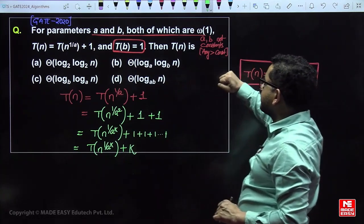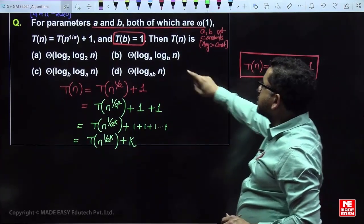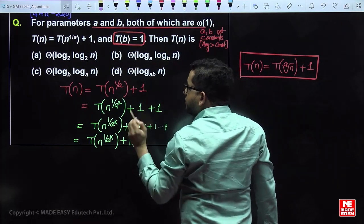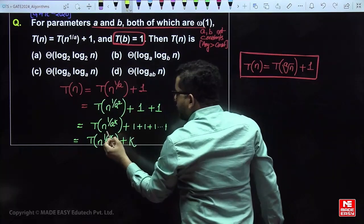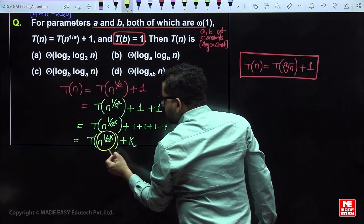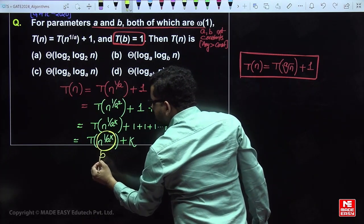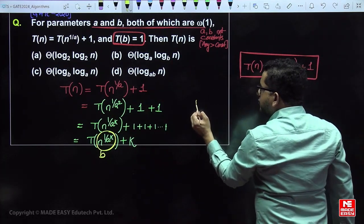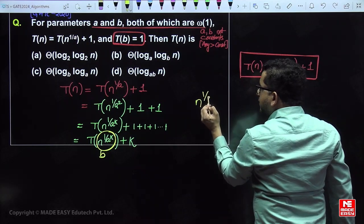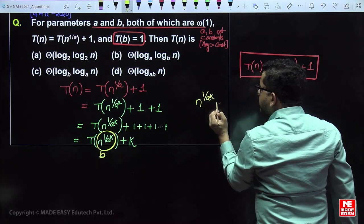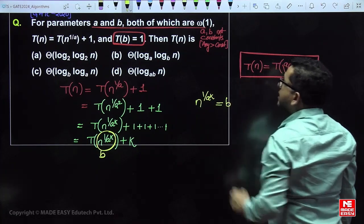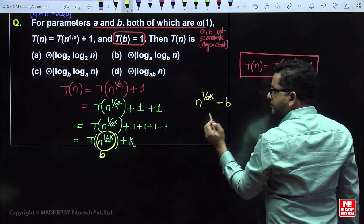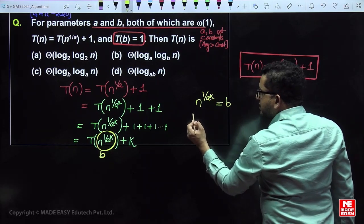The base condition is T(b) = constant. The recursion terminates when the input reaches b. So we need n^(1/a^k) = b. From this we need to find the value of k — apply logarithm with base b.